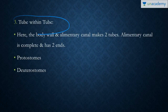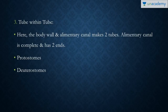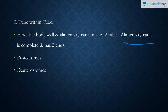Then we have the most advanced type of body plan, that is tube within tube. The outer tube is made by the body wall while the inner tube is made by the alimentary canal. In this case, the alimentary canal has two openings — that is, the mouth and the anus.